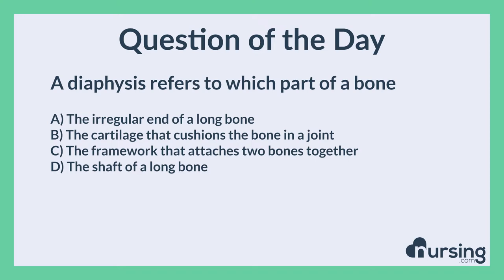A diaphysis refers to which part of a bone? A. The irregular end of a long bone. B. The cartilage that cushions the bone in a joint. C. The framework that attaches two bones together. D. The shaft of a long bone.